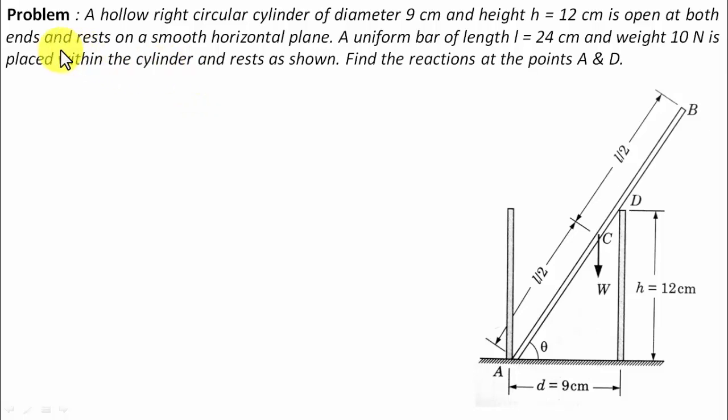It rests on a smooth horizontal plane. A uniform bar of length L equals 24 centimeters and weight 10 Newtons—there is this bar AB whose weight has been given to us in the form of 10 Newtons and at the same time the length of this bar has been given to us as 24 centimeters.